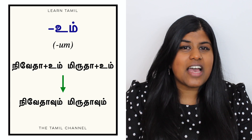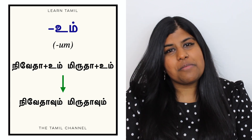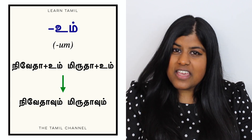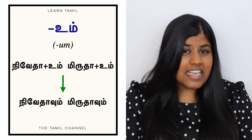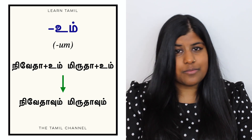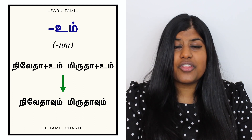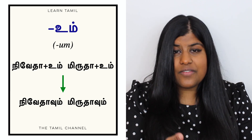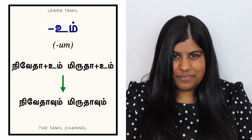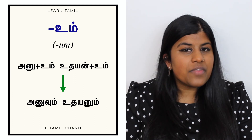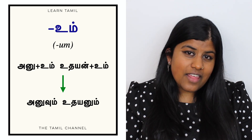Here are a couple more examples of how to add '-um' to words. I've got two female names: Nivedha and Mirudha. Adding '-um' to Nivedha and Mirudha turns them into 'Nivedhavum Mirudhavum', which means 'Nivedha and Mirudha'.